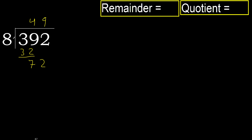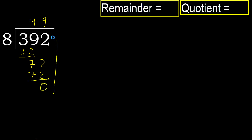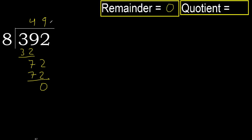8 multiplied by 9 is 72, which is not greater. Subtract — remainder is 0. 392 divided by 8 is 49.